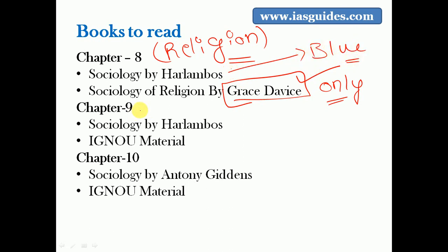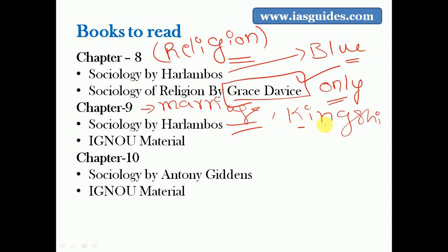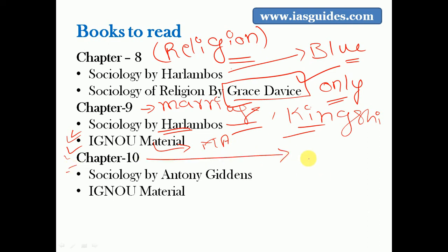Chapter nine deals with the concepts of marriage, family, and kinship. For these concepts, refer to Haralambos's blue colour book and the MA IGNOU material. That covers chapter nine.